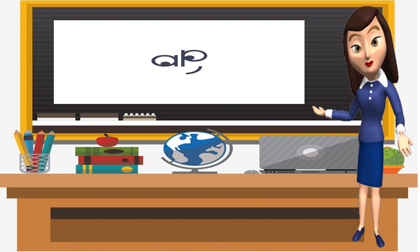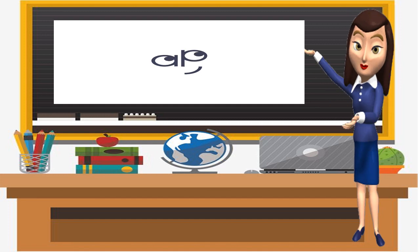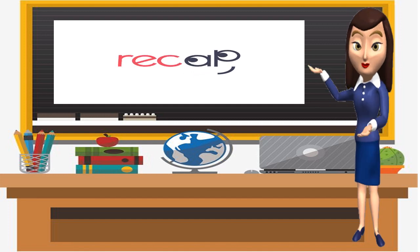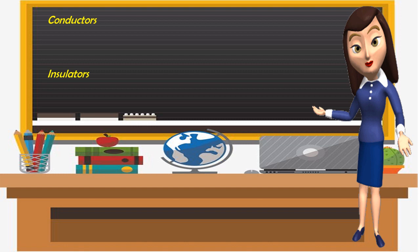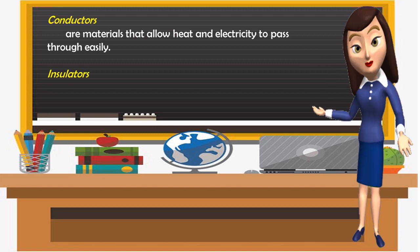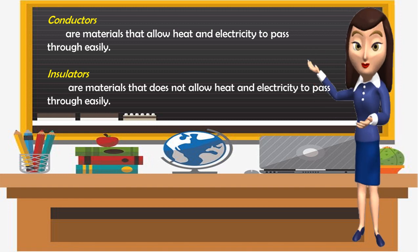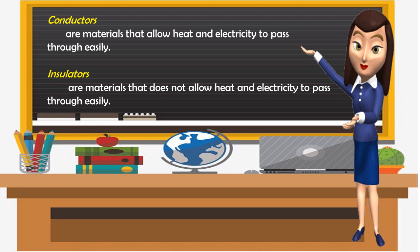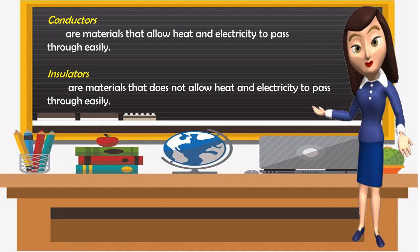Let's have a recap. We discussed before about conductors and insulators. Conductors are materials that allow heat and electricity to pass through easily, while insulators are materials that do not allow heat and electricity to pass through easily.